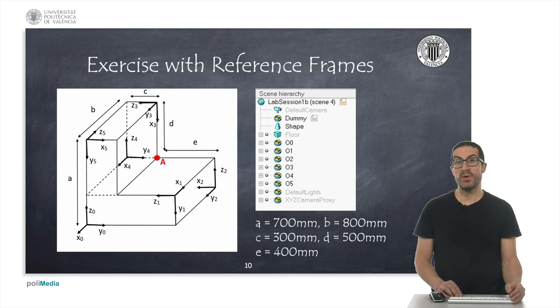So, we must compute first relative transformations between the reference frames by using the specified parameters A, B, C, D, and E. That is, we must first compute transformations between O1 and O0, O2 and O1, O3 and O2, and so on.